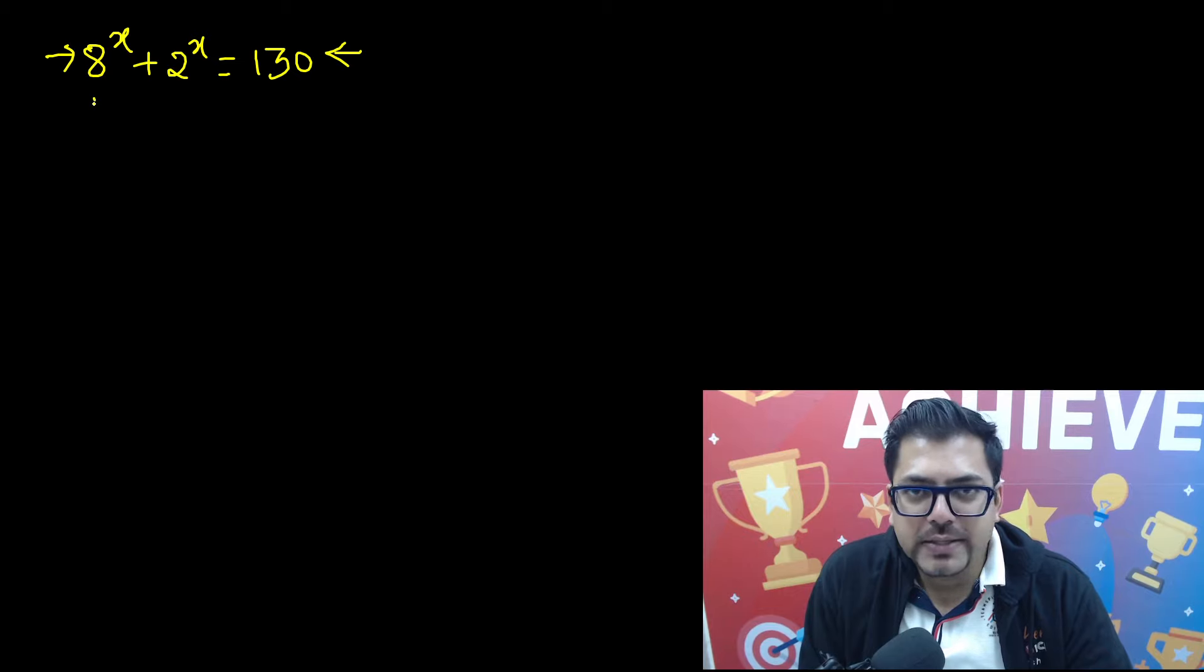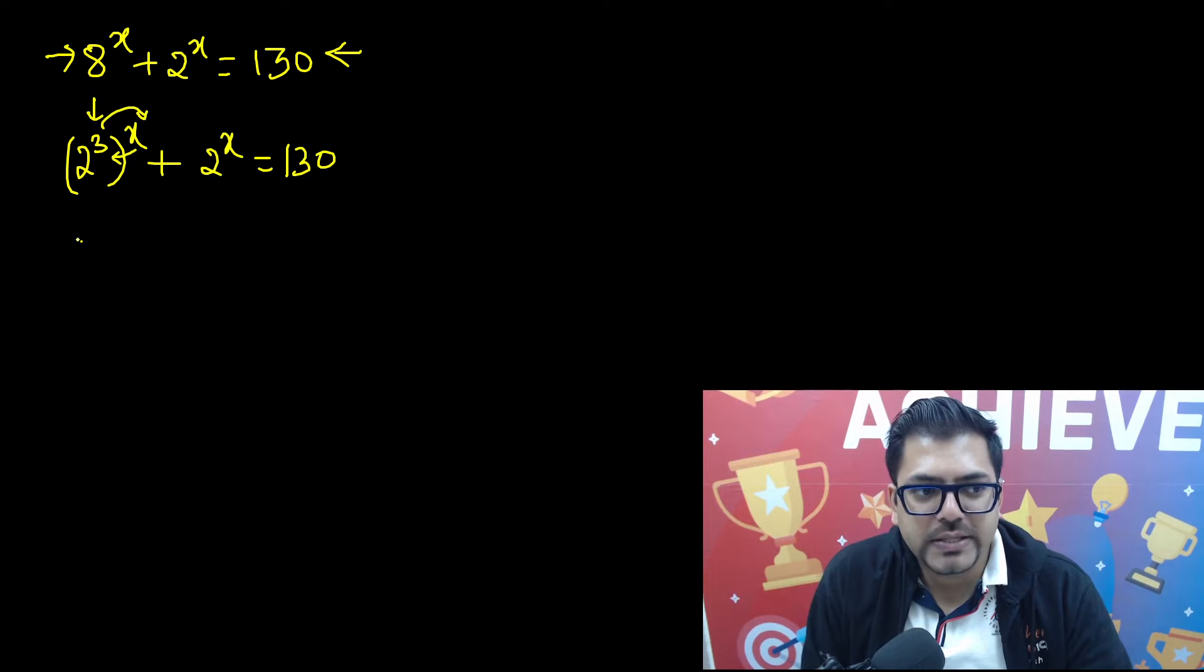First of all, you can write 8 raised to power x as 2 raised to power 3, whole raised to power x, plus 2 raised to power x equals 130. Now using the exponent formula, we can interchange: 3 will go to this side, x will go to this side, so we'll have 2 raised to power x, whole raised to power 3, plus 2 raised to power x equals 130.